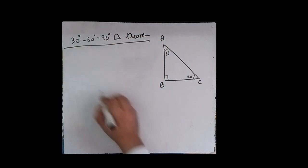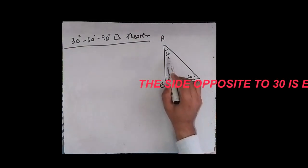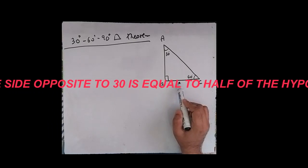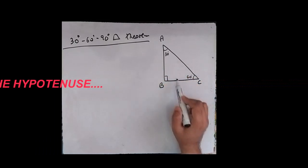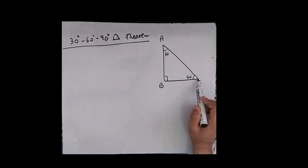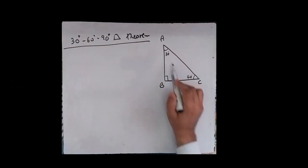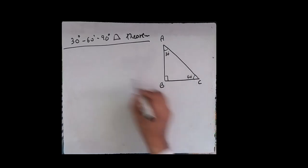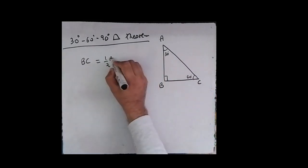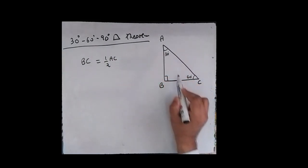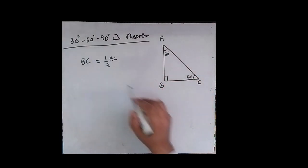What does this theorem say? This theorem says that the side opposite to 30 degrees — the side in front of 30 — is half of the hypotenuse. Which is the side opposite to 30? It is BC. So BC will become half of hypotenuse AC. Side opposite to 30 degrees will become half of the hypotenuse AC. This is one part of this theorem.